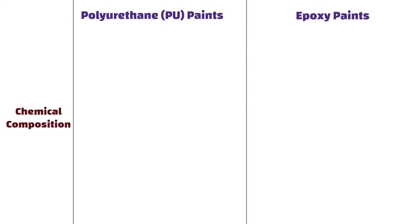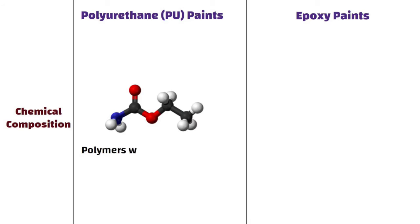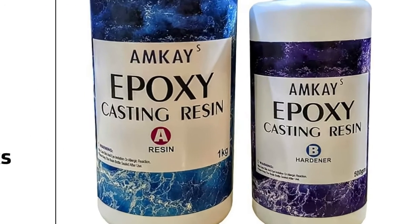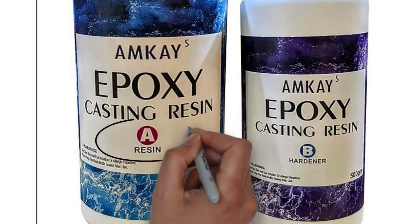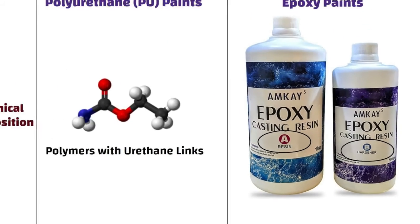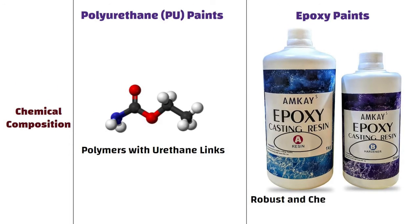Chemical composition. PU paints contain polymers with urethane links in their chemical structure. In contrast, epoxy paints are made from epoxy resins and hardeners, creating a robust and chemical resistant surface.